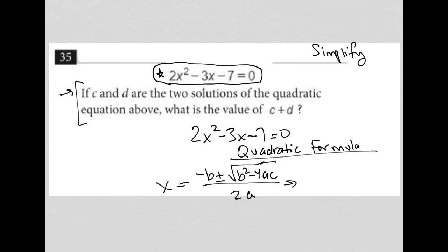So for us, A is 2. B is negative 3. I should have boxed it there. And C is negative 7.